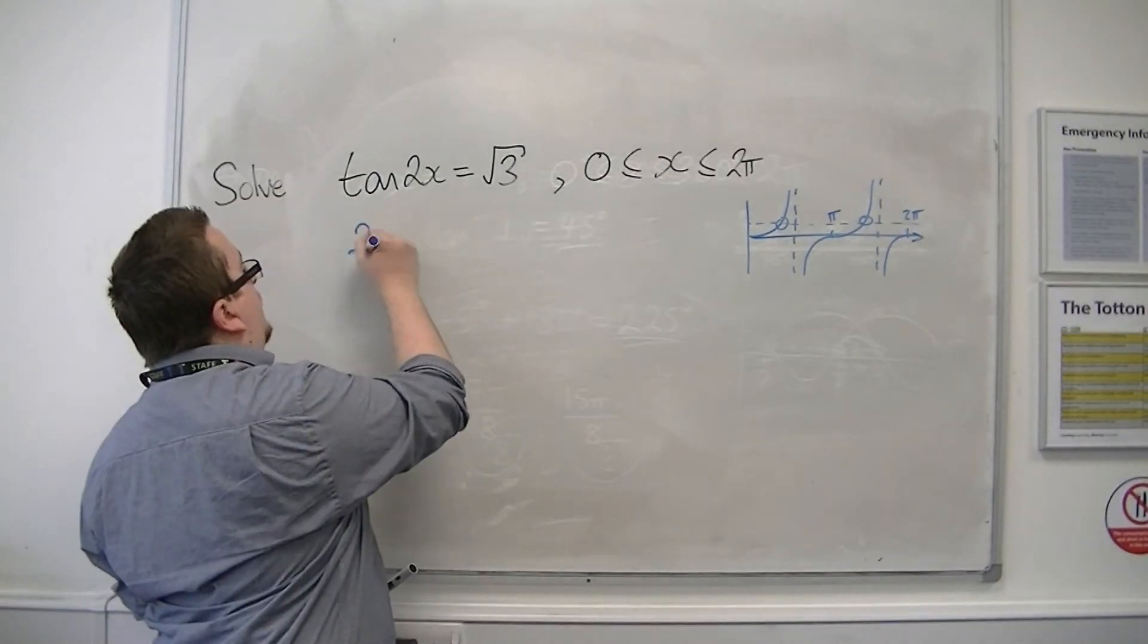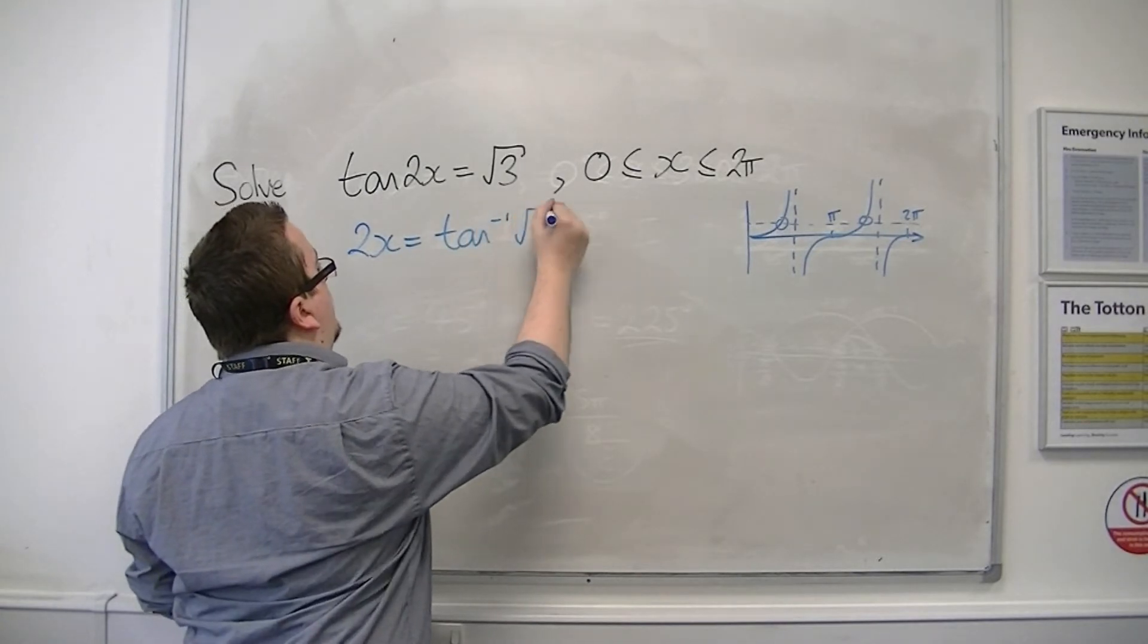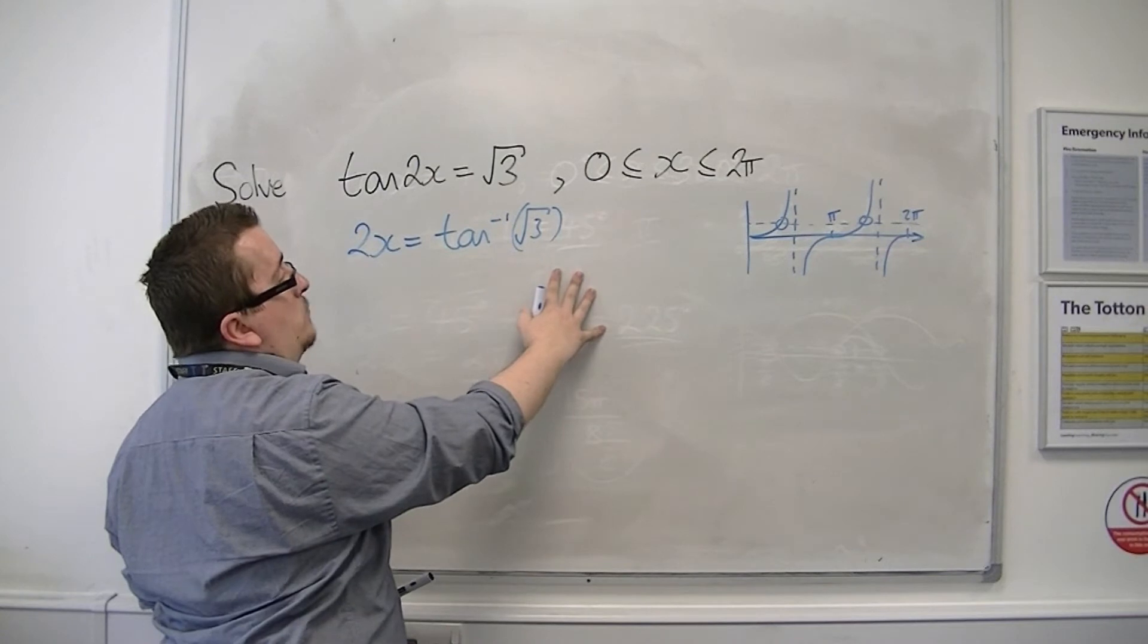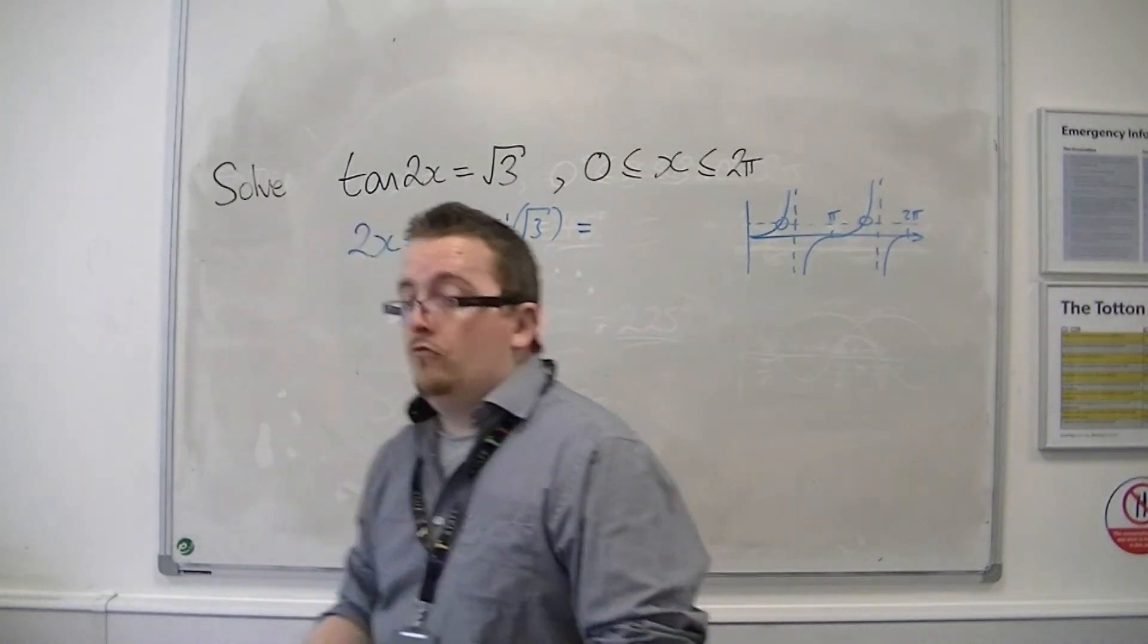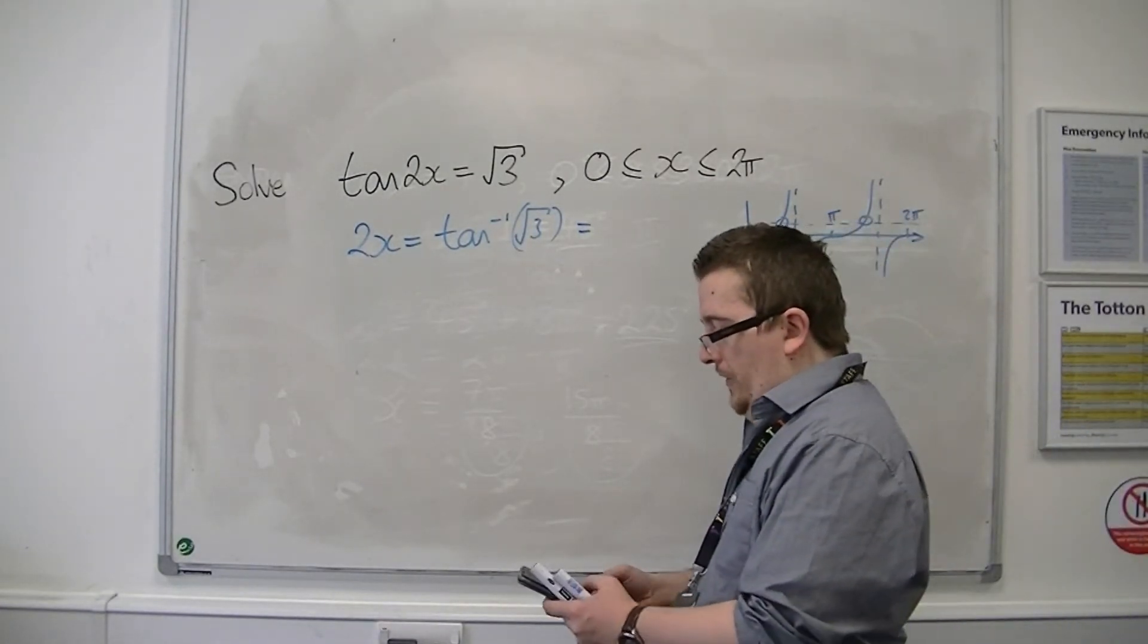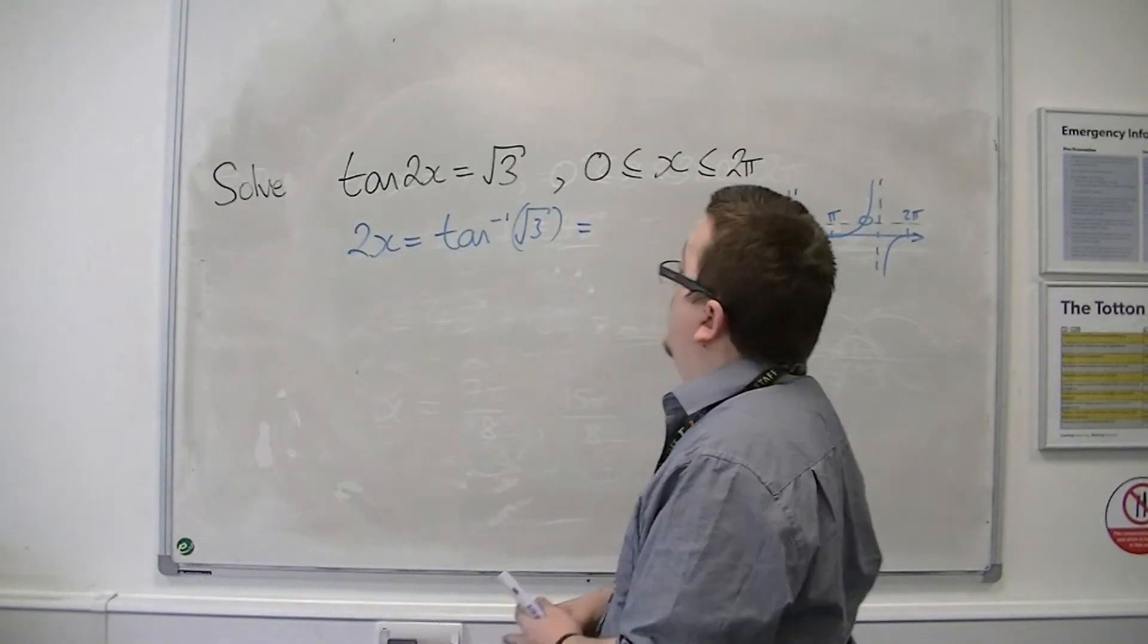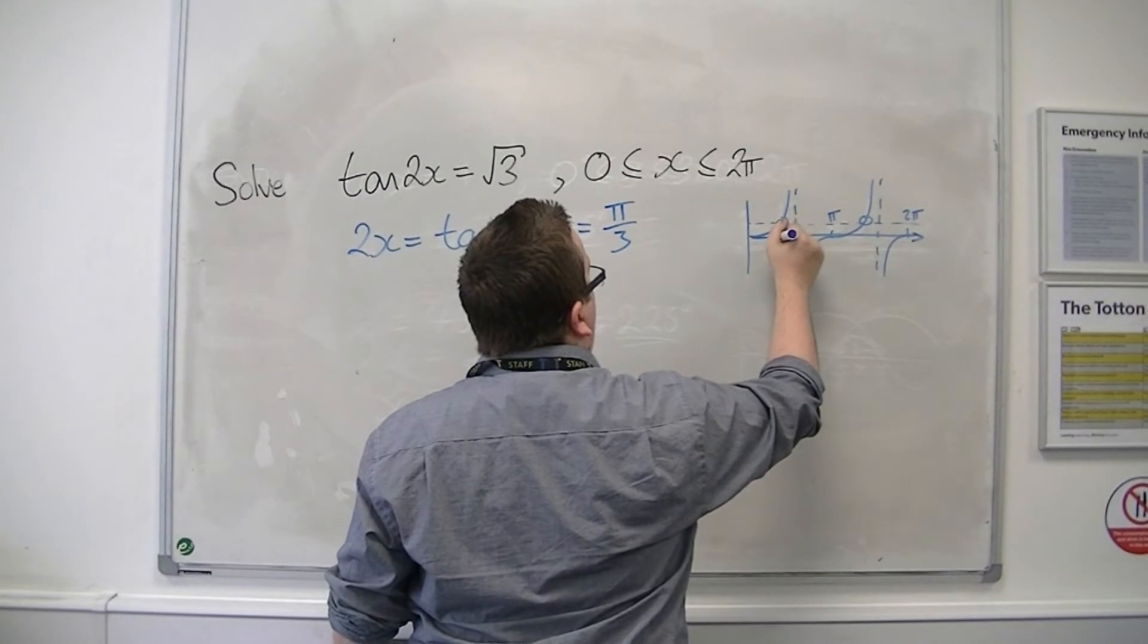So we can inverse tan both sides. So inverse tan of root 3. Notice I've got 2x equals inverse tan of root 3. Make sure you calculate this in radians this time. So inverse tan of root 3 is pi over 3, or 1 third pi. So this first solution is pi over 3.